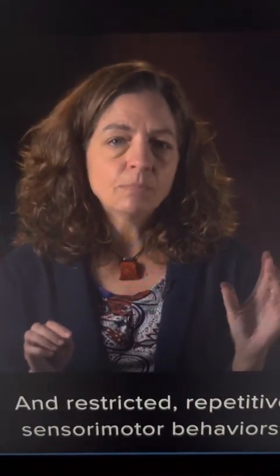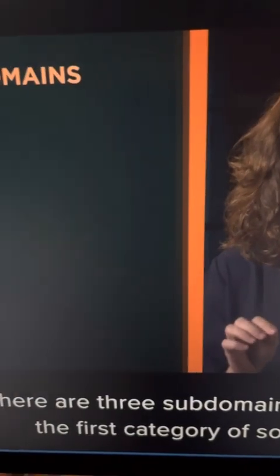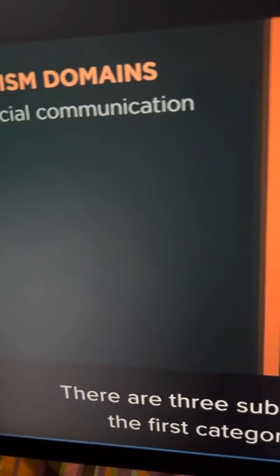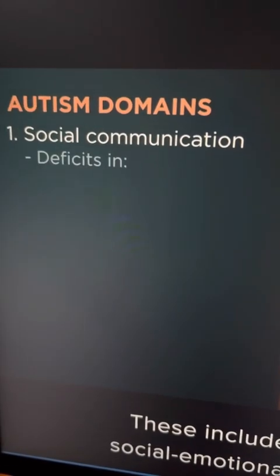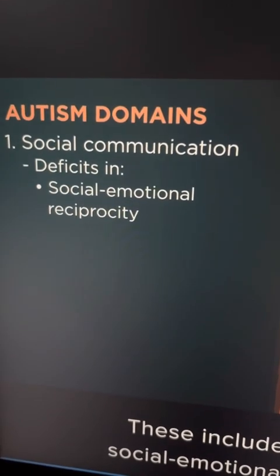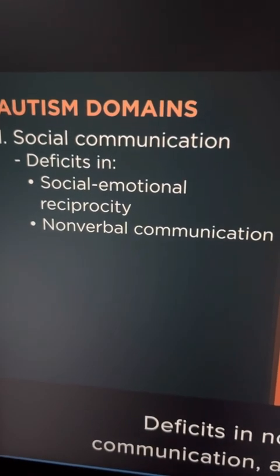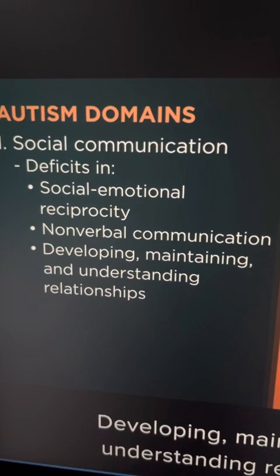There are two domains: social communication, and restricted repetitive sensory motor behaviors. There are three subdomains under the first category of social communication. These include deficits in social emotional reciprocity, deficits in nonverbal communication, and deficits in developing, maintaining, and understanding relationships.